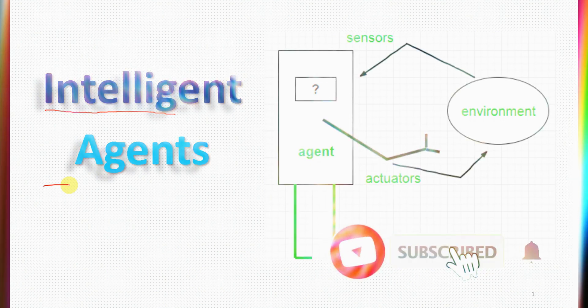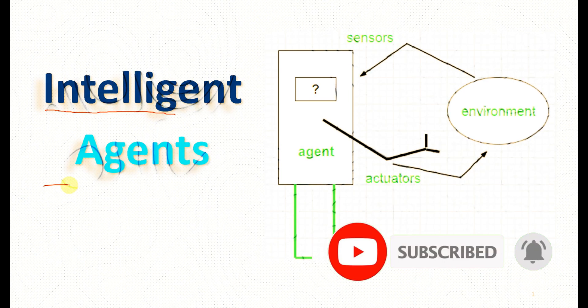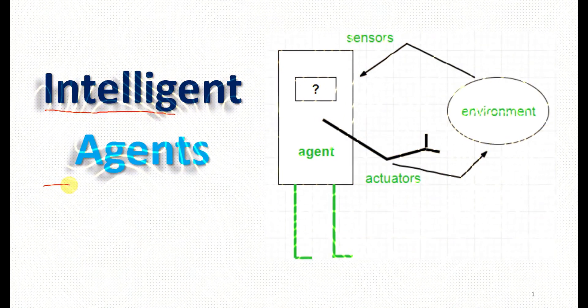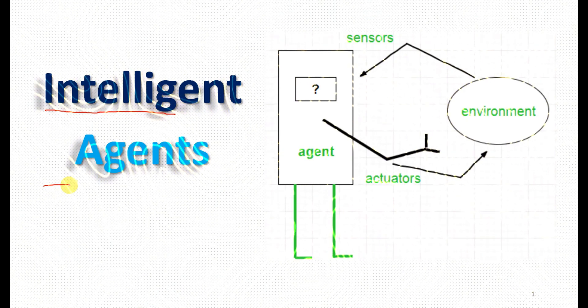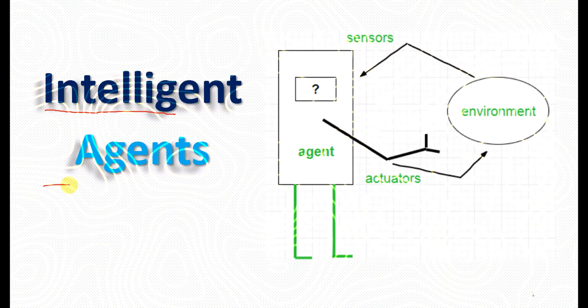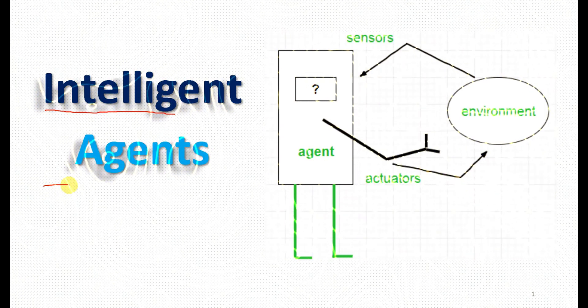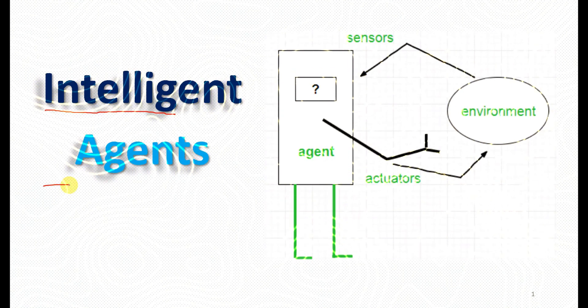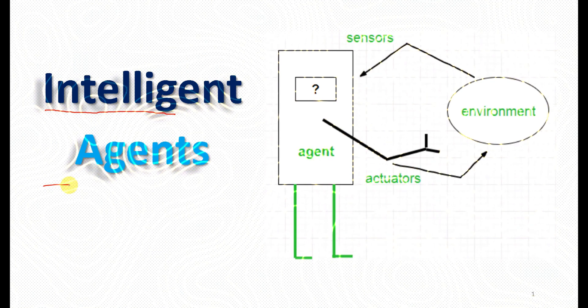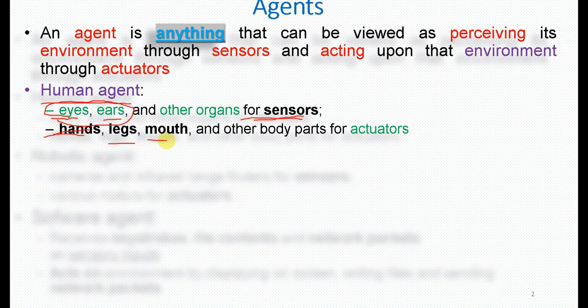There is intelligence and there is agent. This agent is an intelligent agent that understands the environment and takes action on the environment with sensors and actuators. So an agent which is interacting with the environment, sensing the environment and taking action with reaction.